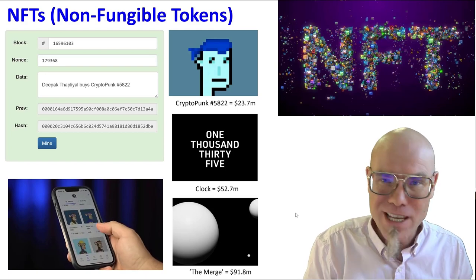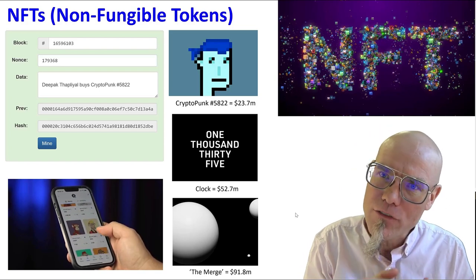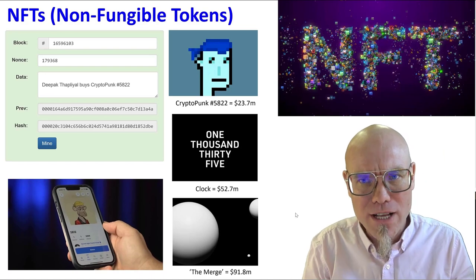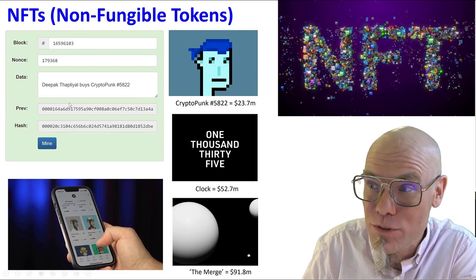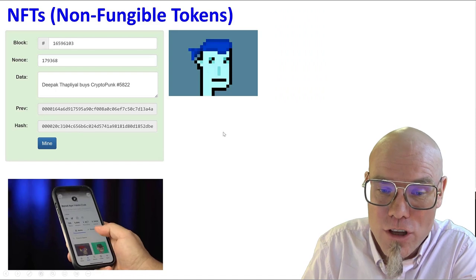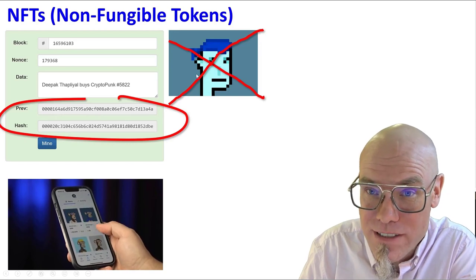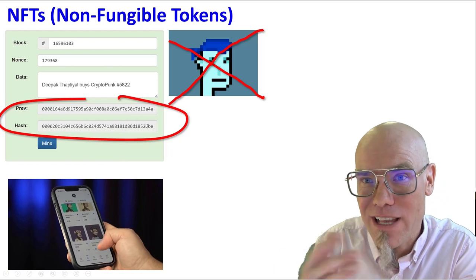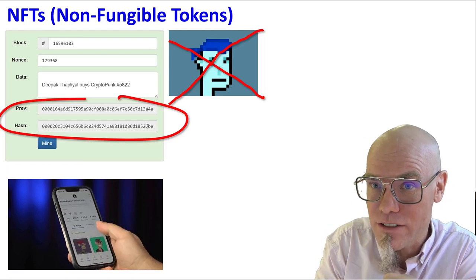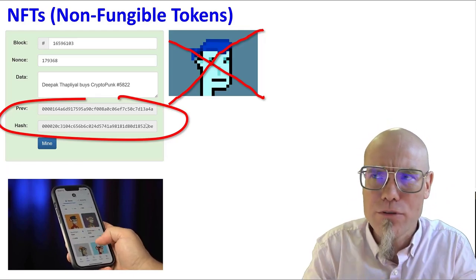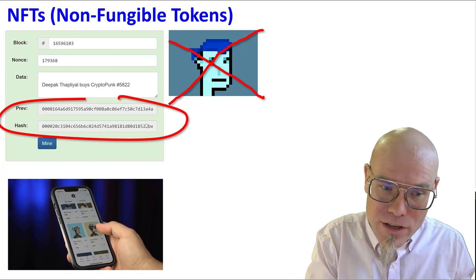This year 'The Merge' was sold for 90 million dollars. Now you can have these pictures, but these pictures actually are not on the blockchain. They will show up in your wallet — same as you have a traditional leather wallet, now we have a digital wallet. But what's actually on the blockchain is just the hash value that refers to the image.